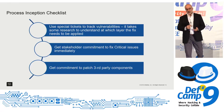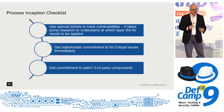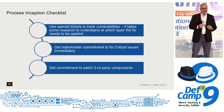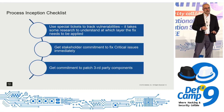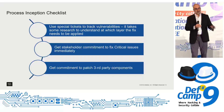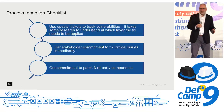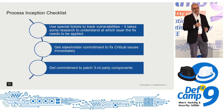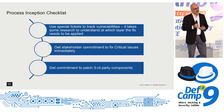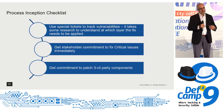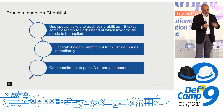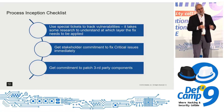Another important thing: get all stakeholders to understand and agree on what is critical, and give a complete commitment to fix those within a set amount of time. Both the set time and what's critical are important. When you have 2,000 critical items it means none of them will be fixed because there's no way to prioritize. You need to agree there are a few things you absolutely cannot have. In our world it's remote code execution in production — if anything like that comes up, we stop everything and fix it first.